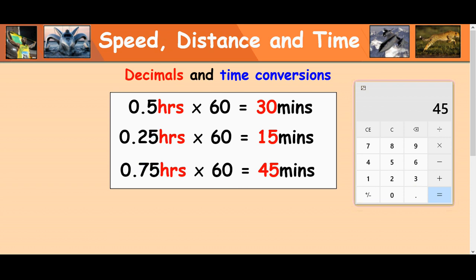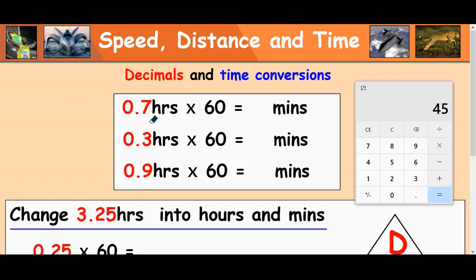And what that means is we can use it in more kind of difficult calculations. If we're saying, well, what is 0.7 hours? Alright, okay. Well, you just times it by 60. 0.7 times 60. 42 minutes. Great.